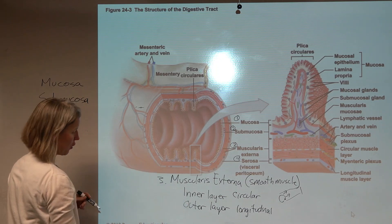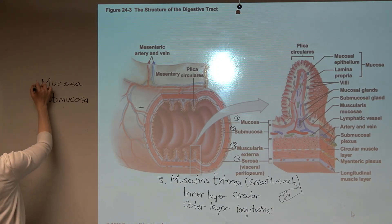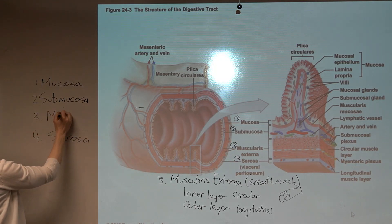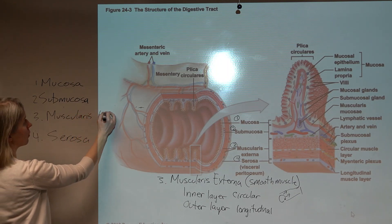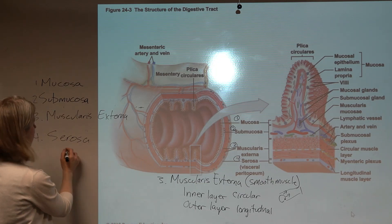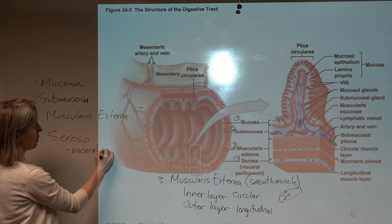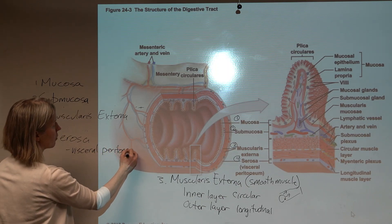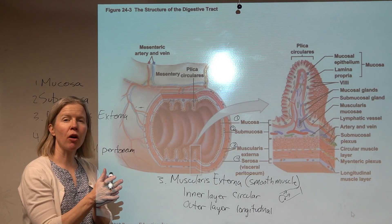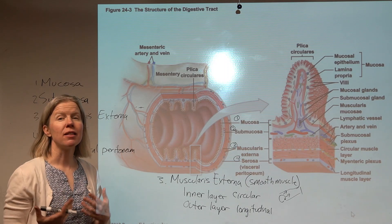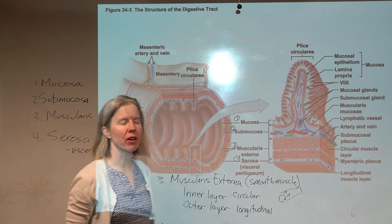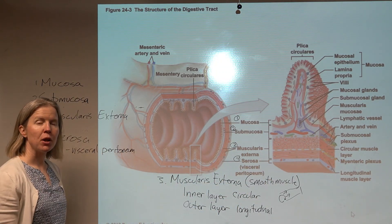The fourth and outermost layer is the serosa, which is synonymous with the visceral peritoneum. It is part of those mesenteries, being a serous membrane that exudes serous fluid to fill the peritoneal cavity. You can see blood vessels in there as well.